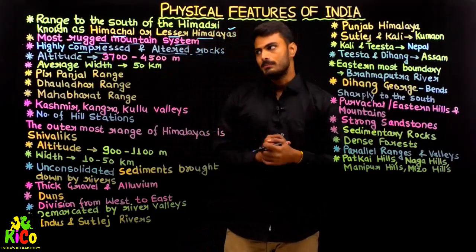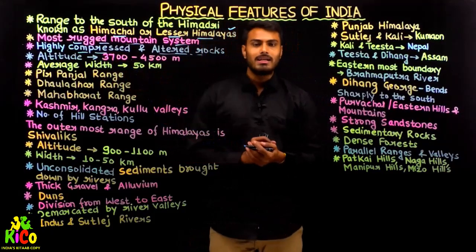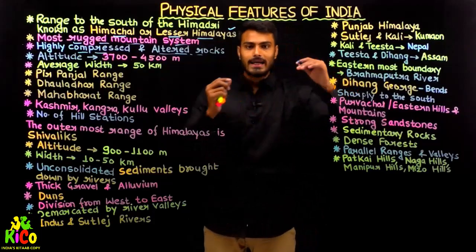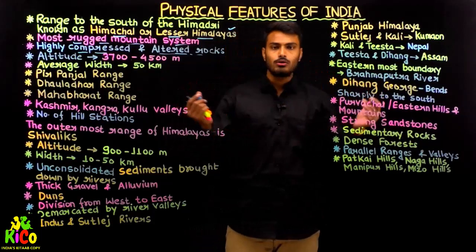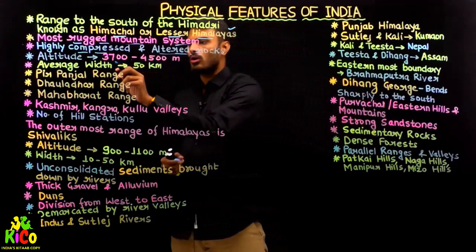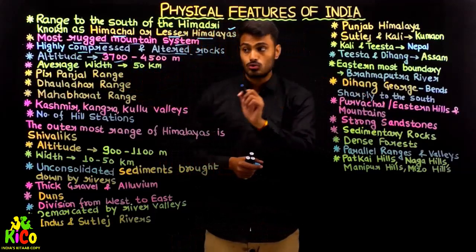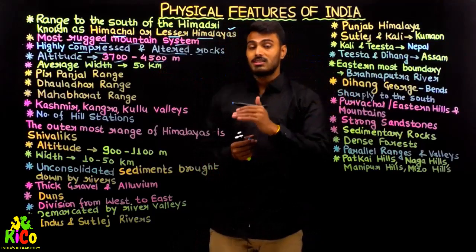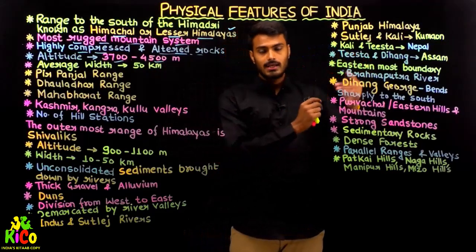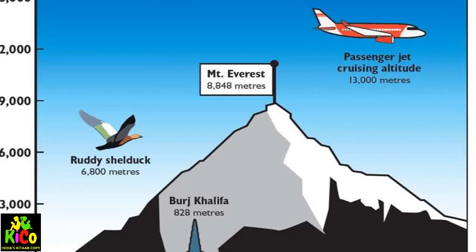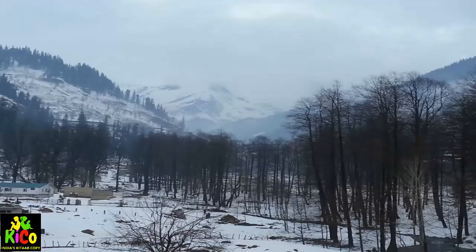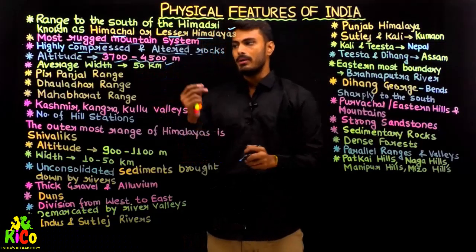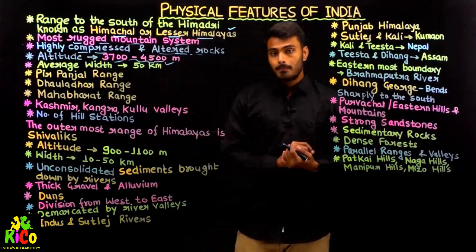These rocks have very high density. In terms of altitude, the average height of this range varies from 3,700 meters to 4,500 meters — a little less than the Greater Himalayas. Most of the hill stations in India, such as Mussoorie, Shimla, Kullu, Manali, and Nainital, are found in this very range.